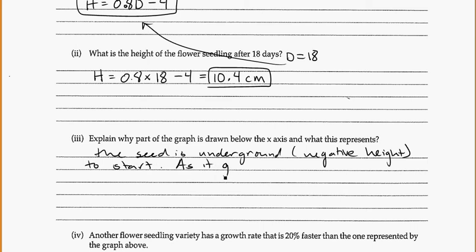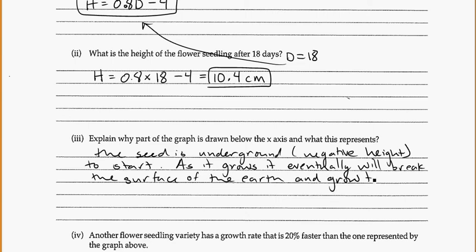So it's got a slightly negative height. So the seed is underground, negative height to start. As it grows, it eventually will break the surface of the earth, and grow taller, with positive values for the height.